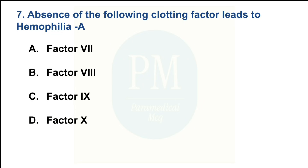Absence of which clotting factor leads to Haemophilia A? Option A — Factor 7; Option B — Factor 8; Option C — Factor 9; Option D — Factor 10. The correct option is Option B: Factor 8.